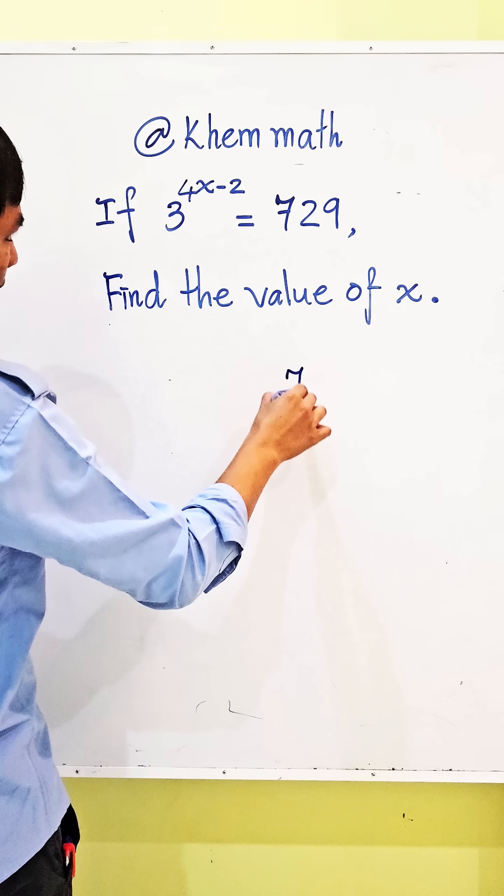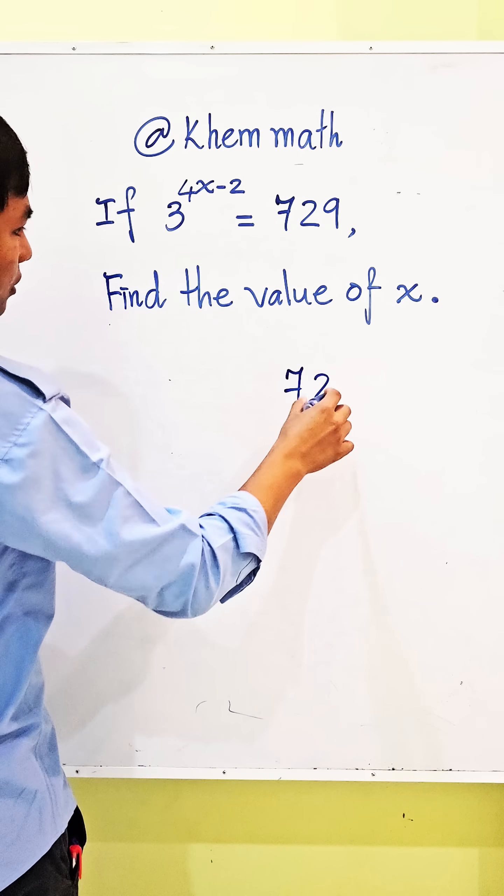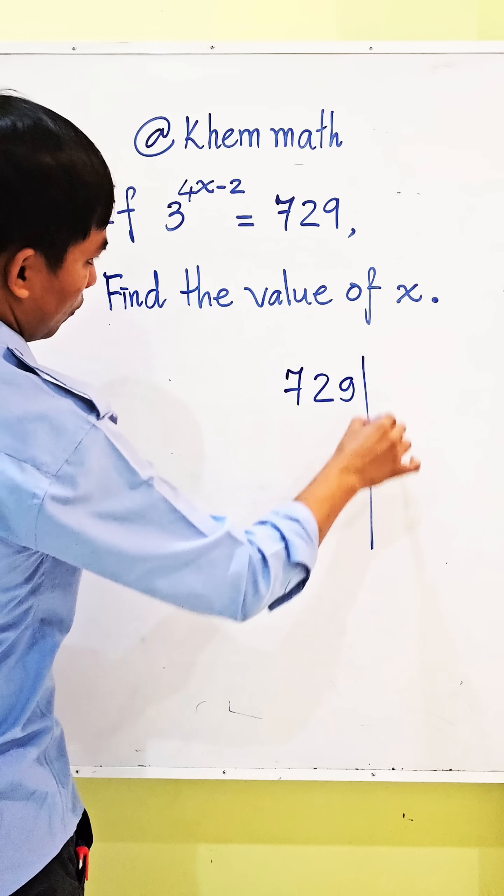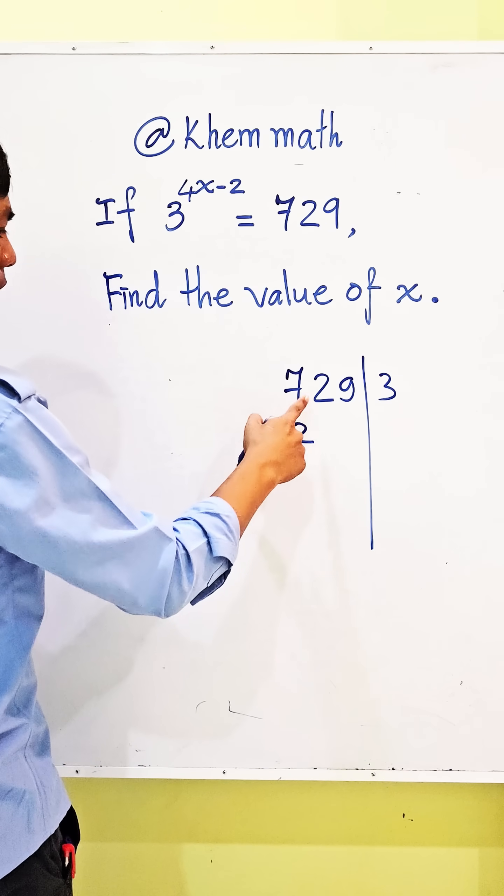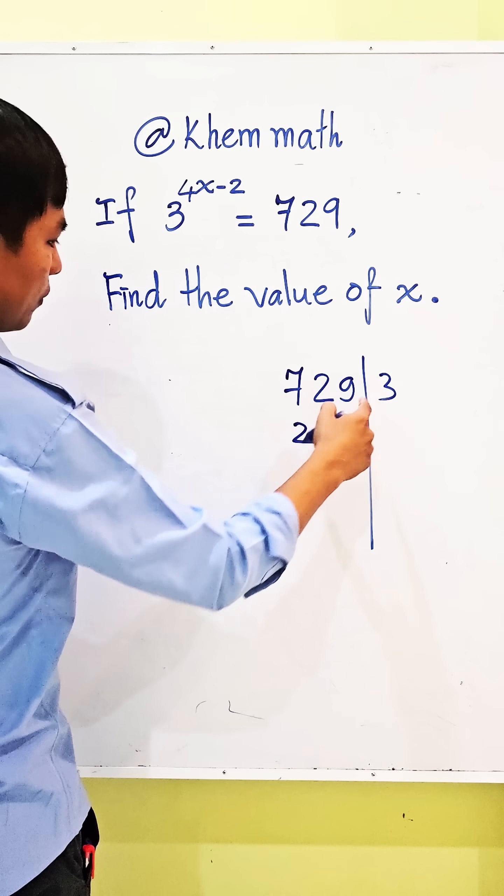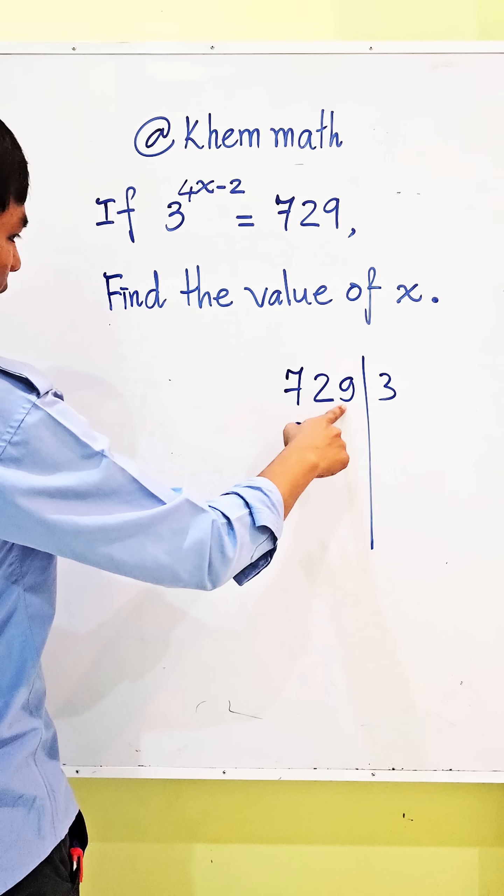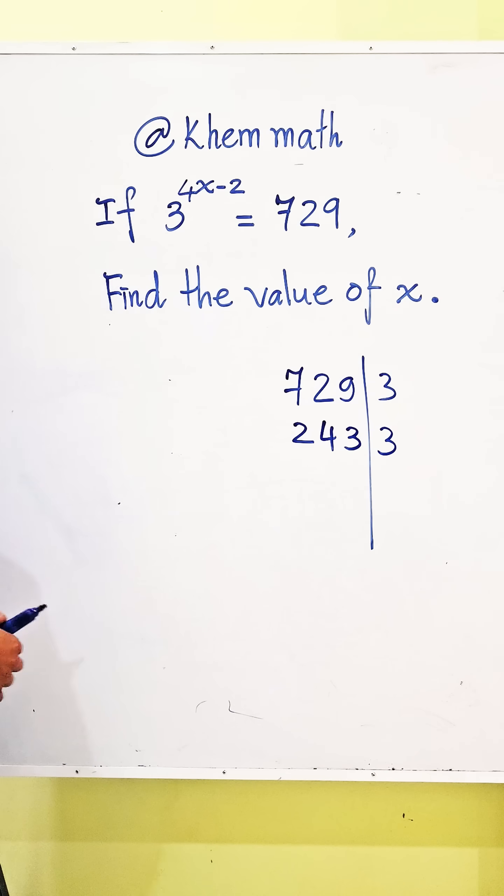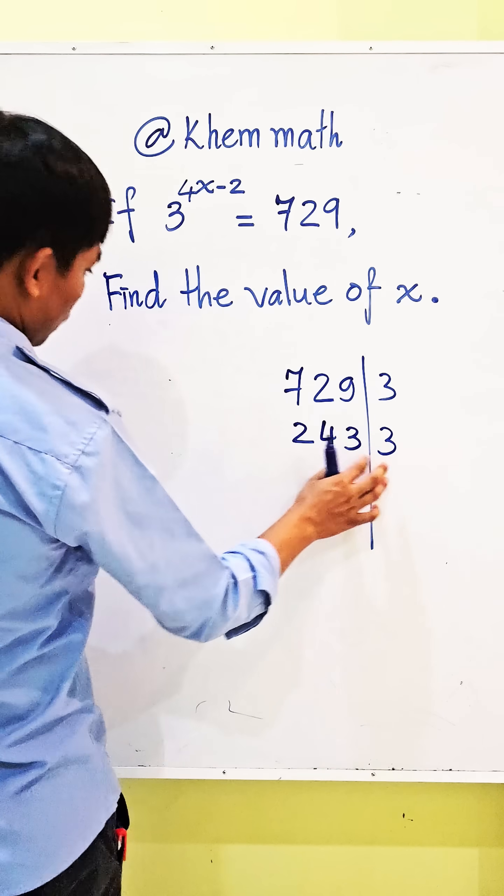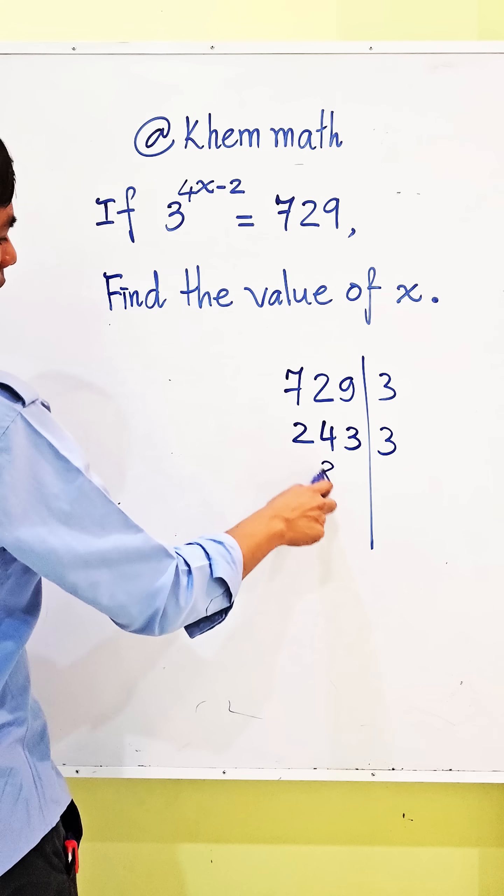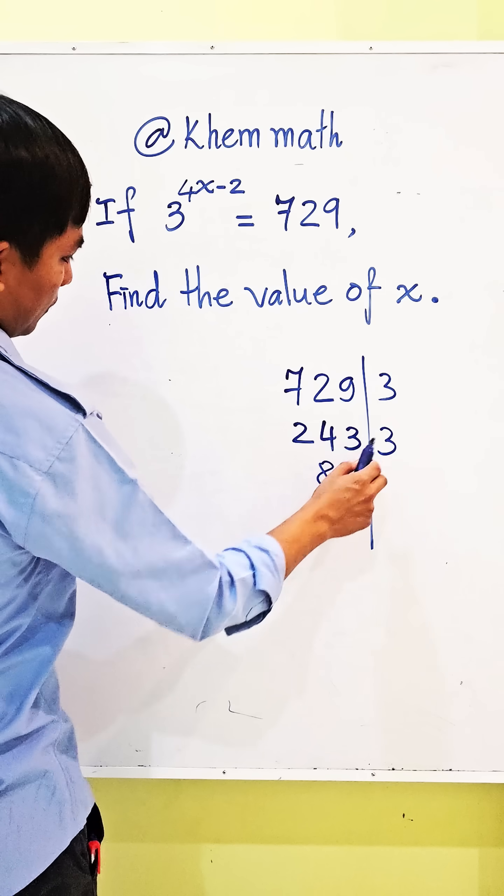So we can write 729 divided by 3, we get 243. 243 divided by 3, we get 81. 81 divided by 3, we get 27. 27 divided by 3, we get 9. 9 divided by 3, we get 3.